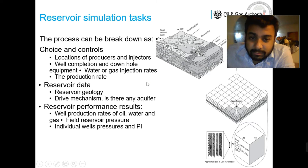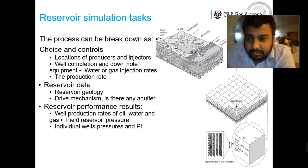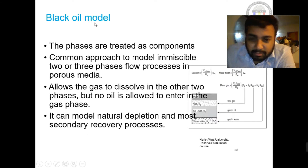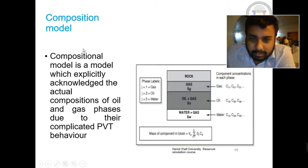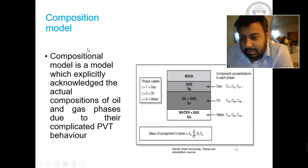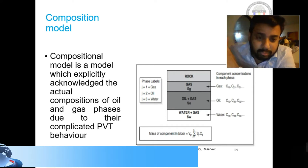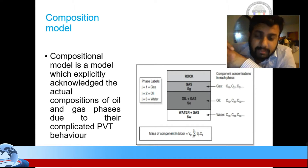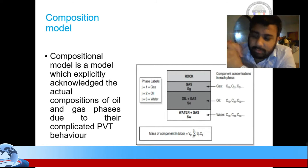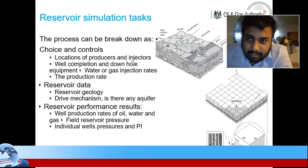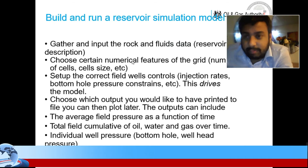The question is which model is more accurate. Both can be used depending on the particular case. For simple processes like gas injection, the black oil model may work. But for issues like water coning or polymer injection, the compositional model is important. We have to determine which one is more appropriate for the situation.